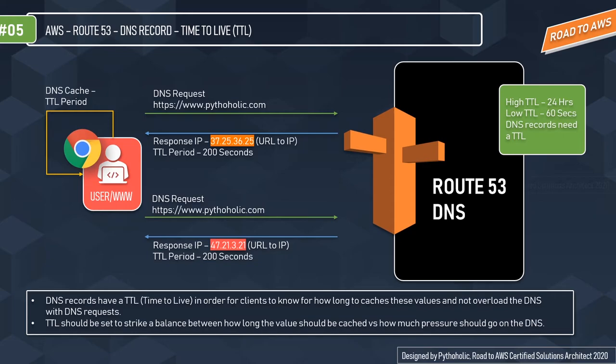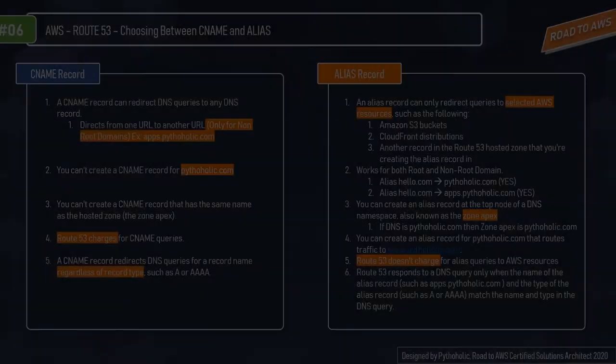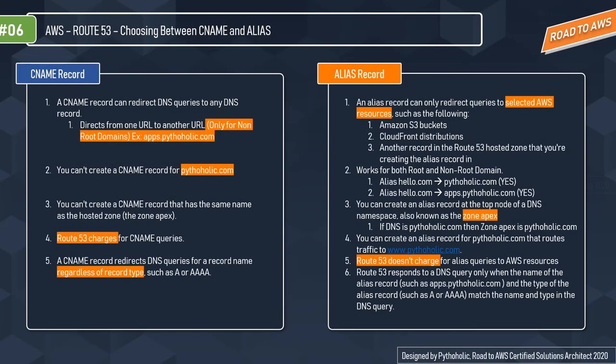TTL is a very important concept not only for the exam but also as a solutions architect. Now let's look at an important comparison: CNAME versus Alias records. CNAMEs are basically URL-to-URL mappings. A CNAME record can redirect DNS queries to any DNS record, directing from one URL to another URL, but it is only used for non-root domains — for example, apps.pytholic.com.